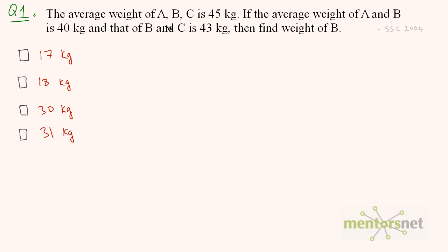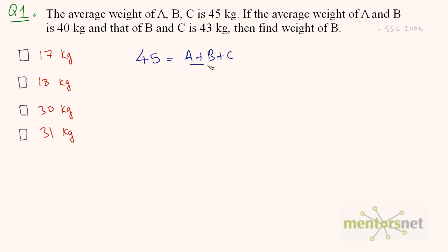So let us assume that the weights of A, B, and C are A, B, C respectively. The average weight of A, B, and C which is given as 45 will be equal to A plus B plus C divided by 3. Let us write that as equation 1.